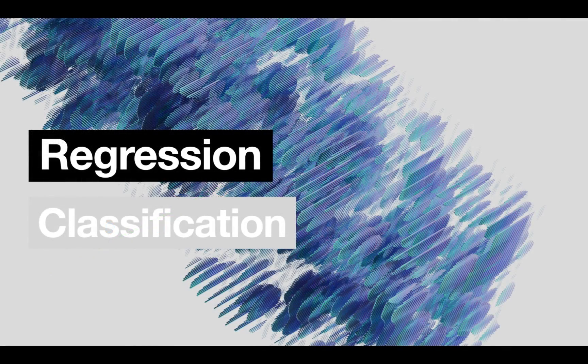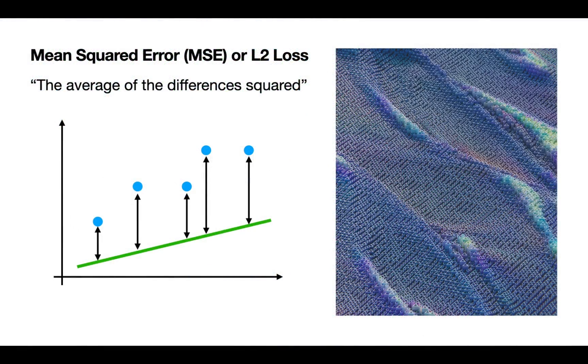When it comes to loss functions, there are two main types we use: regression and classification problems. Regression problems is like the one we mentioned before. This is when we want to predict a continuous variable. It can range any value between, for example, 0 and 1 or 0 and 100, and we want to predict a number on that number scale.